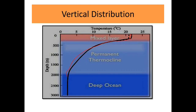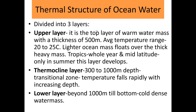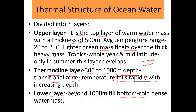In vertical distribution, temperature falls rapidly in the thermocline region. The surface layer is the first layer, the thermocline is the second layer, and the deep ocean is the third layer where the temperature is cold and temperature change is insignificant. The thermal structure of ocean water divides into the upper layer of warm water mass with thickness of 500 meters and average temperature of 20 to 25 degrees Celsius. The thermocline layer extends from 300 to 1000 meters depth where temperature falls rapidly and is also called the transitional zone. The lower layer beyond 1000 meters down to the bottom contains cold, dense water.